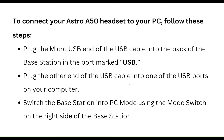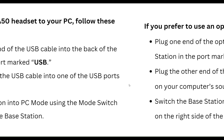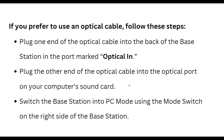To connect your Astro A50 headset to your PC via USB, follow these steps. First, plug the micro USB end of the USB cable into the back of the base station in the port marked USB. Then plug the other end of the USB cable into one of the USB ports on your computer. Switch the base station into PC mode using the mode switch on the right side of the base station.